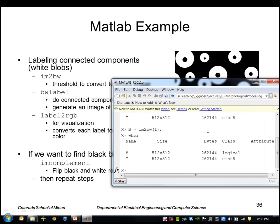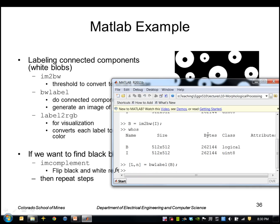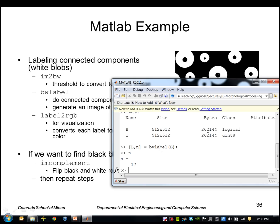So then I'll apply bwlabel to that binary image, and this produces a label image. And n is the number of connected components that was found. In this case it's 17.